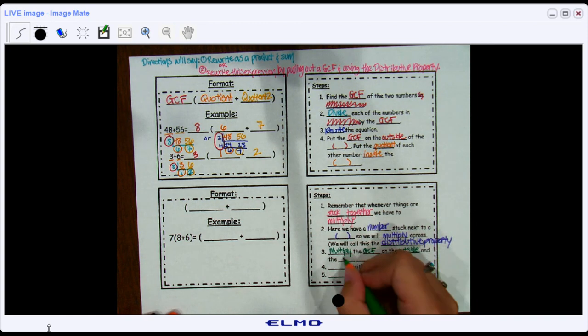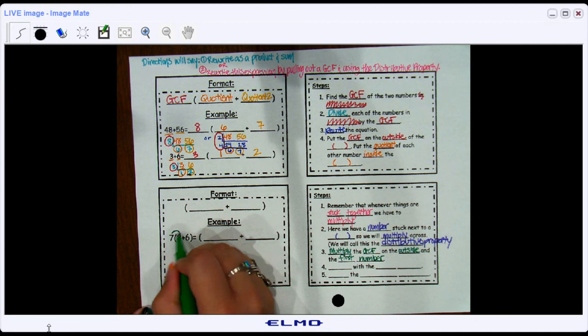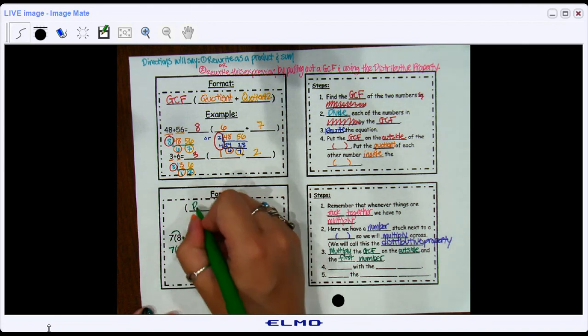When you do the distributive property, you're going to multiply the GCF that's on the outside and the first number. So let's see what that actually looks like. So I'm going to take the GCF that's on the outside and multiply it with the first number. So that's 7 times 8. Well, 7 times 8 is 56. So my first product is going to go there. That's product 1.